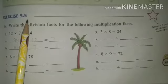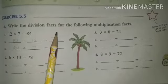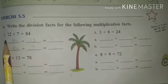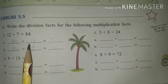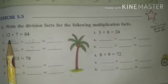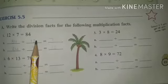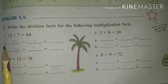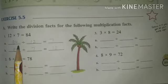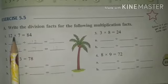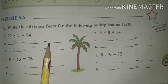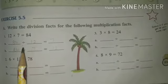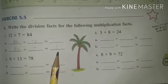Next, Exercise 5.5, Point A: write the division fact for the following multiplication fact. First question: 12 multiply 7 equals 84. This multiplication fact gives two division facts — 84 divide 12, and 84 divide 7, which gives answer 12.